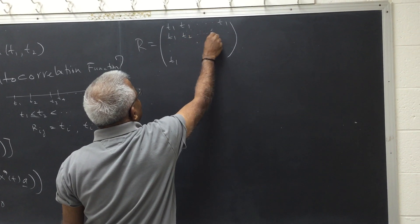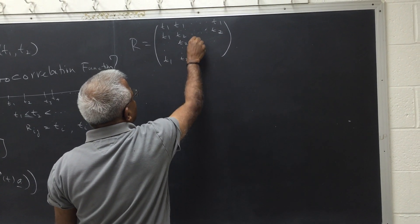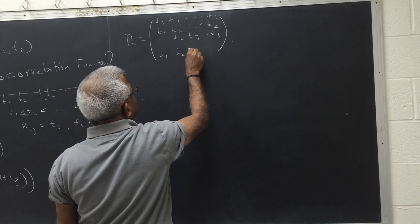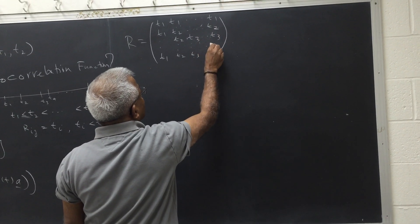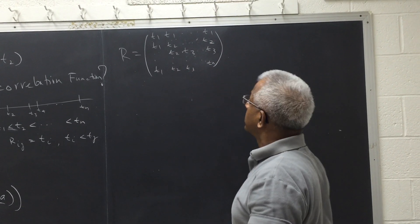This will be t2. So t2. You get the idea that this will be t3, t3, t3. And finally tn. So the question is, is this a non-negative definite matrix?